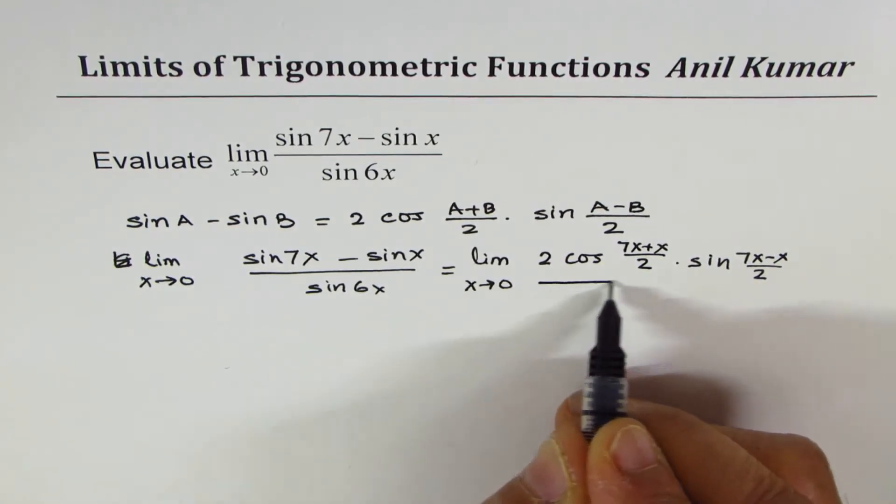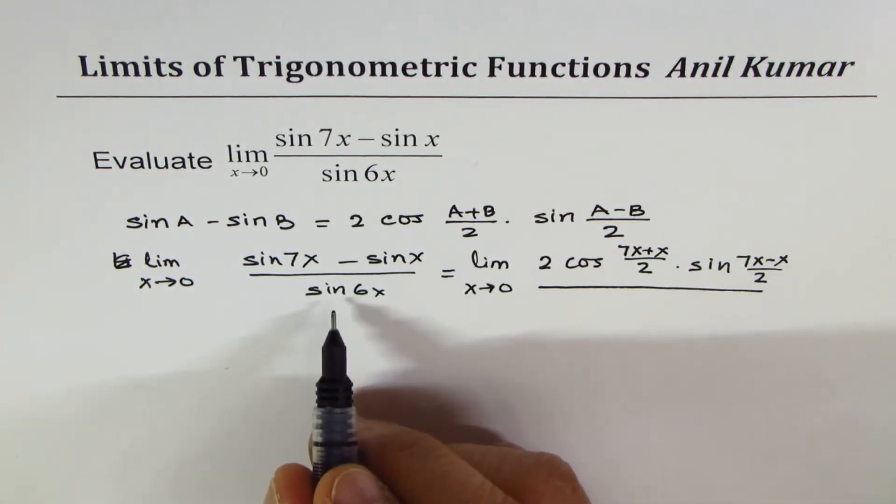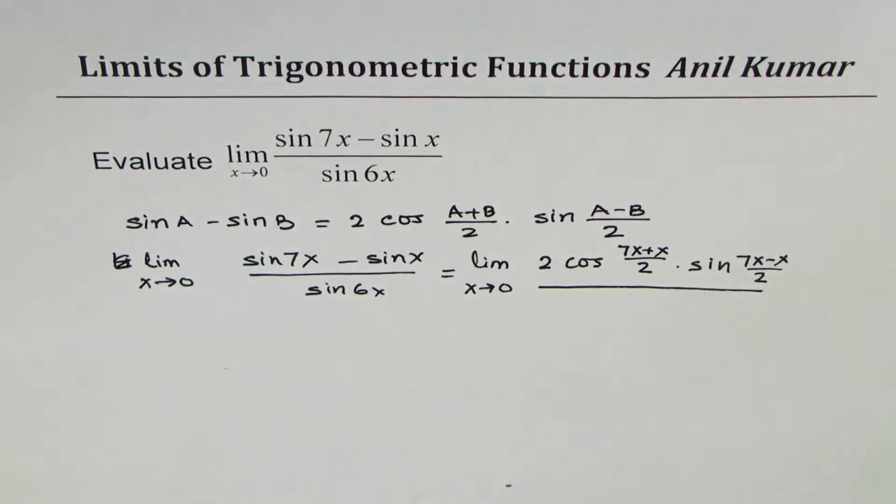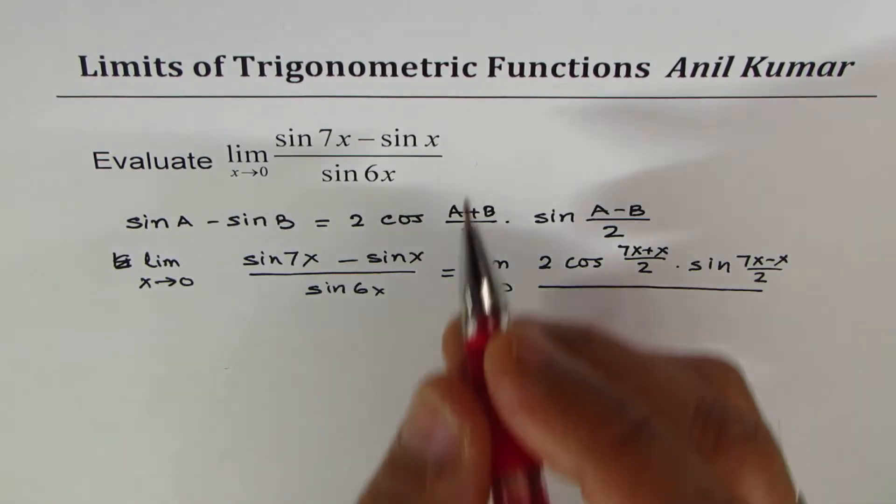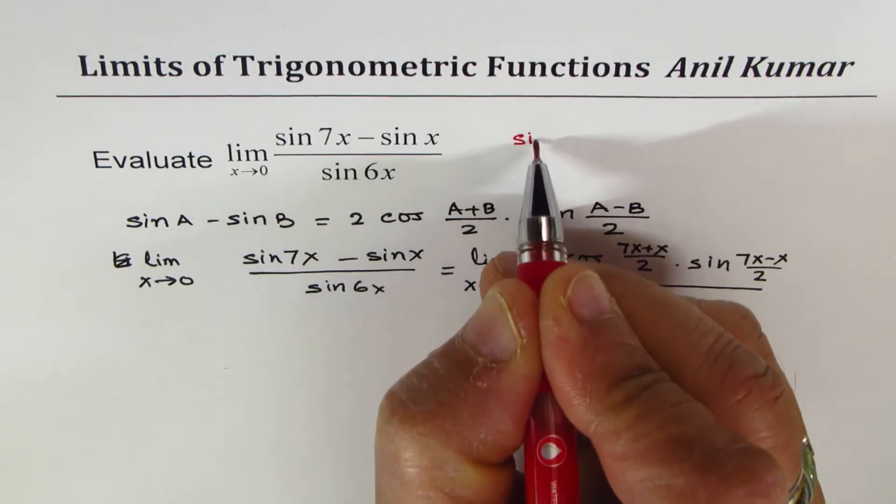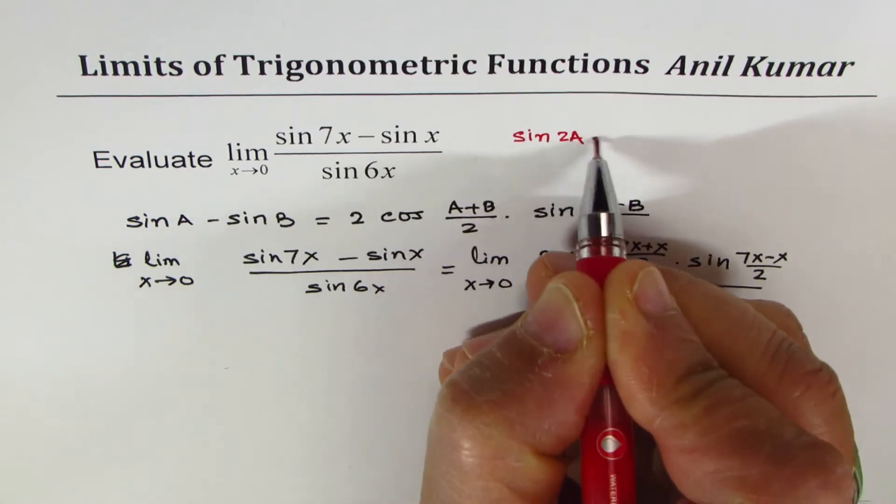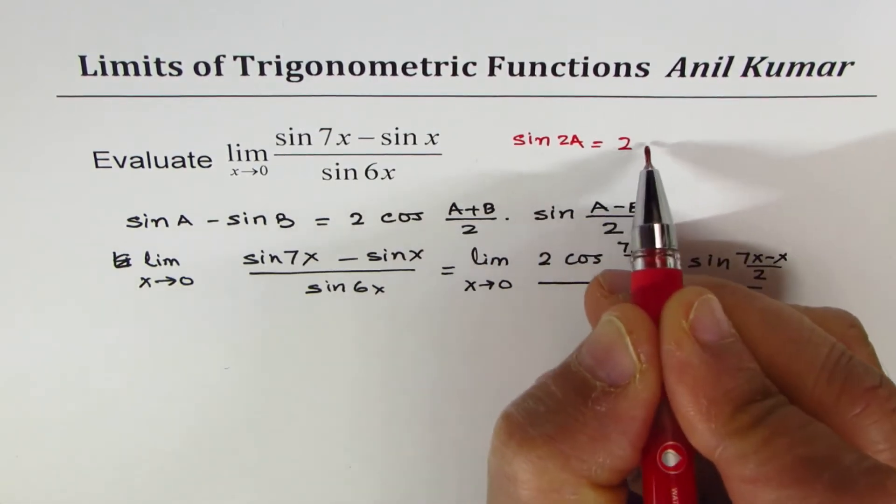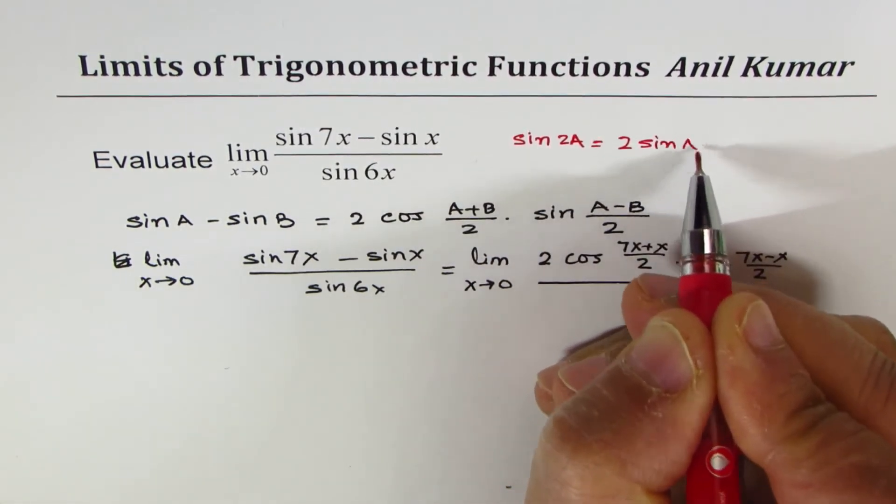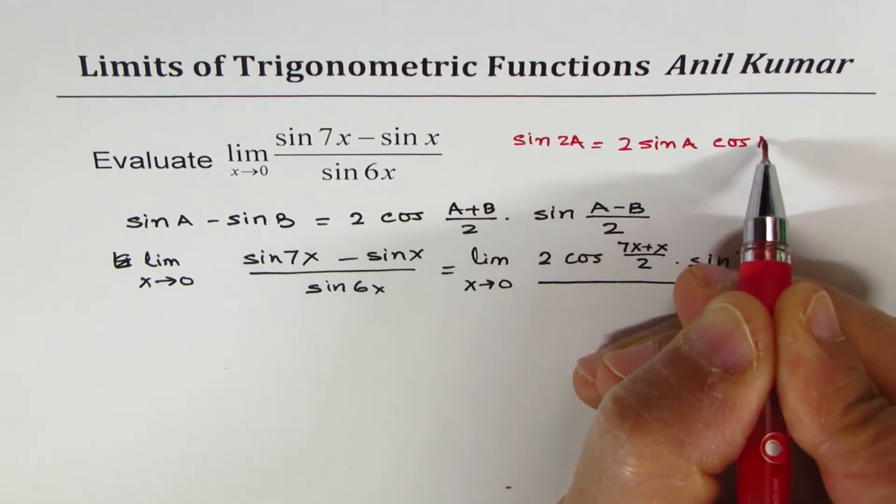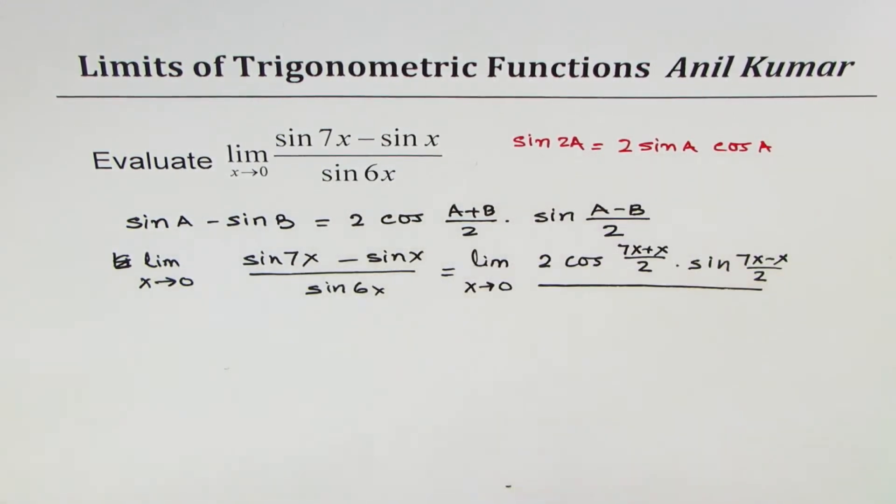In the denominator, we can use another identity. If I have sine 2a, then I could always write this as 2 sine a cos a. That is the half angle. We'll use this one for the denominator.